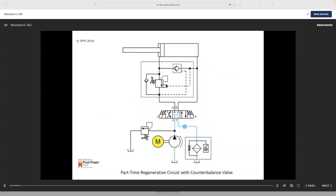Part-time regen circuit at rest. Retract simply sends pump flow through the counterbalance valve bypass check and at the same time holds the pilot-to-close valve closed.